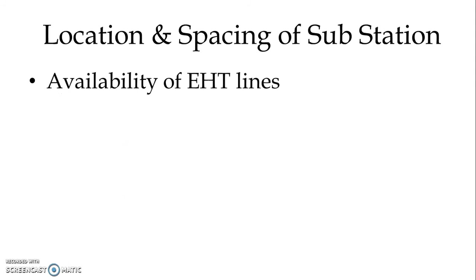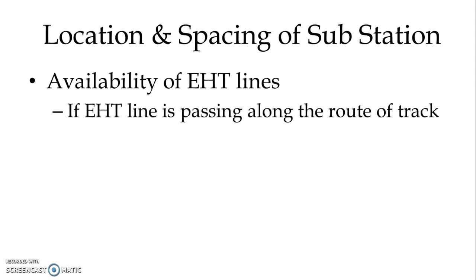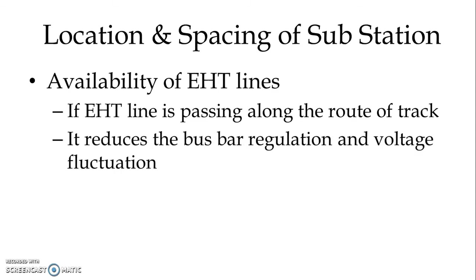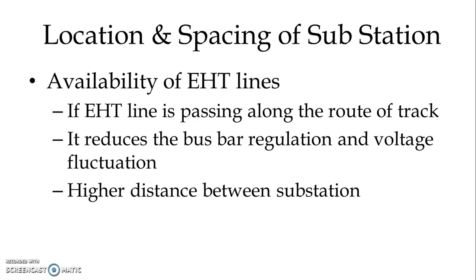Availability of extra high tension lines: if an extra high tension line is passing along the route of the track, then it reduces the bus bar regulation and voltage fluctuation, so a higher distance between substations can be selected.